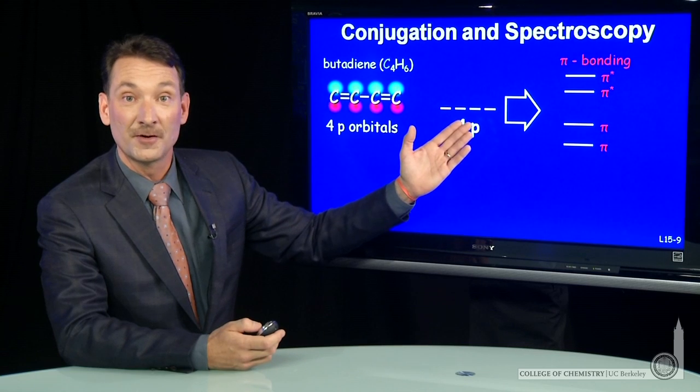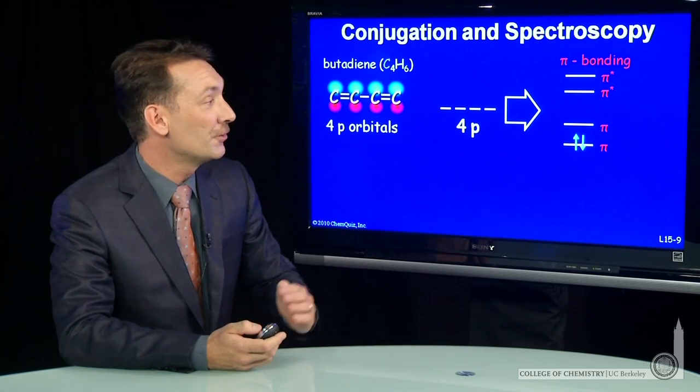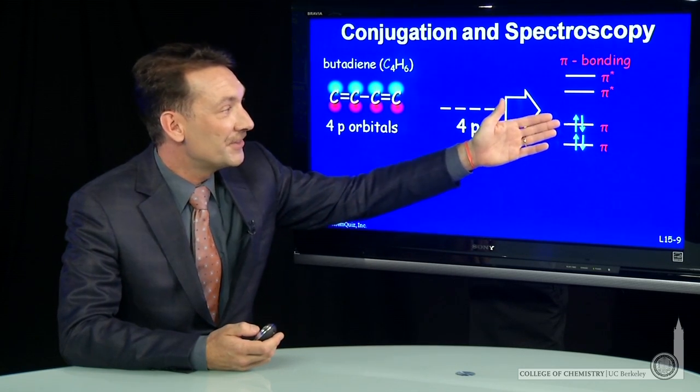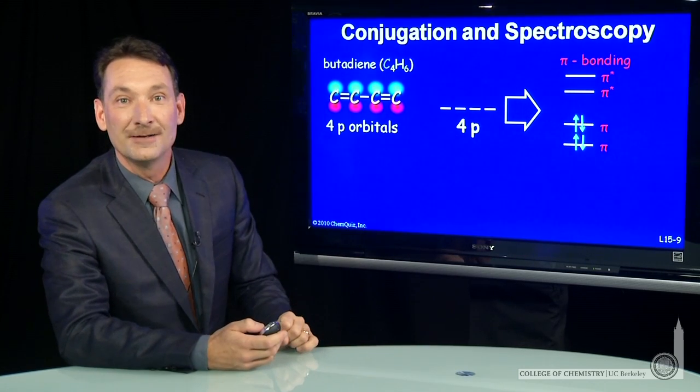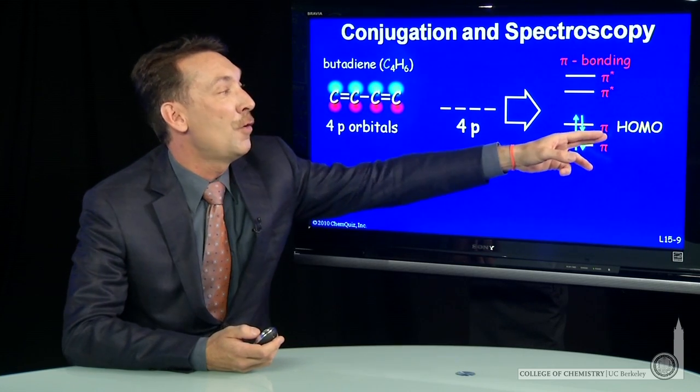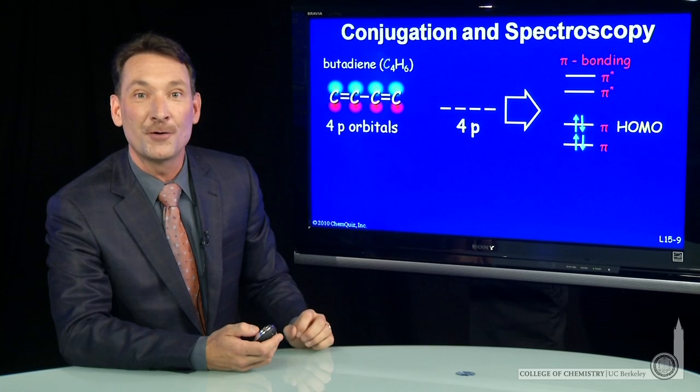Now, 4 electrons from the p orbitals will fill these molecular orbitals. So we'll put those in: 1, 2, 3, 4. And we'll notice that the highest occupied molecular orbital is a HOMO, highest occupied molecular orbital, is a pi bonding orbital.